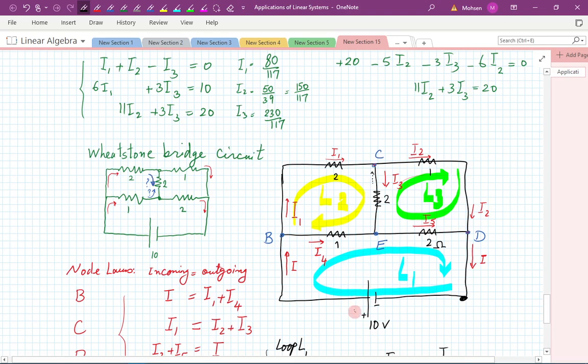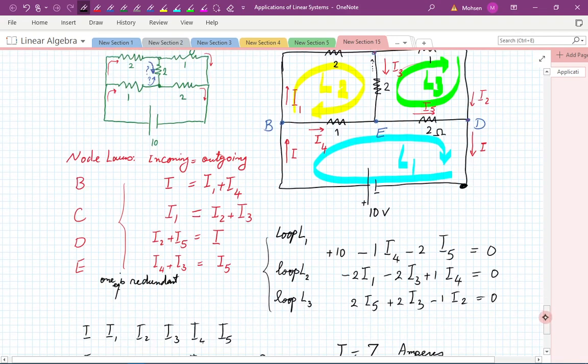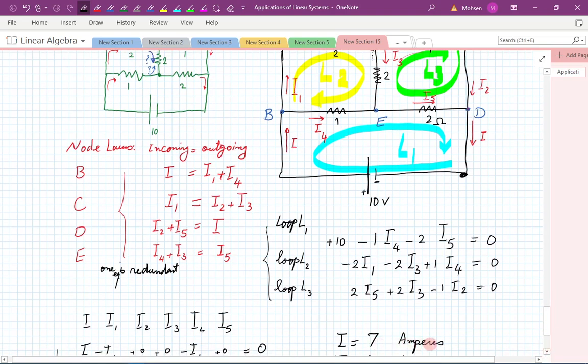What should be the resistance of that resistor so that it will be an equivalent circuit? Equivalent means if the voltage of the battery is the same, what should be the resistance here so that the current will be the same. In this problem, if this is 10 volts, then the current here is 7 amps, as we found last time.